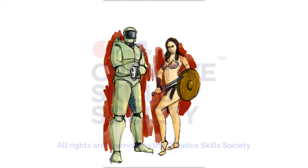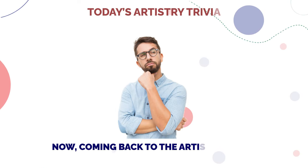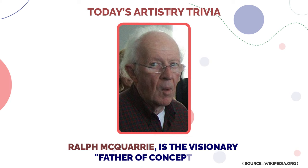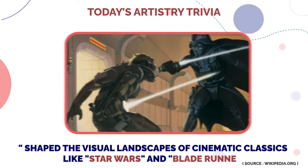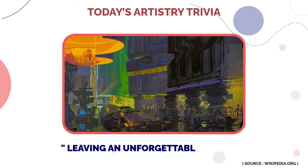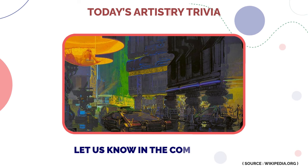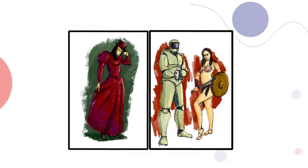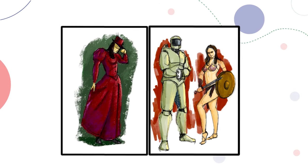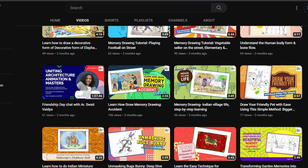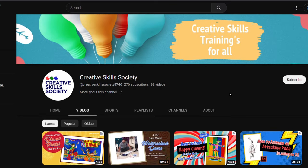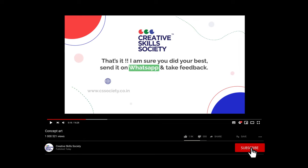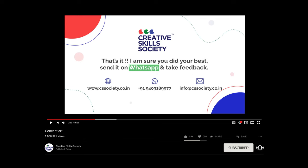Don't forget to practice and come up with creative ideas. Coming back to the artistry trivia question — Ralph McQuarrie is the visionary father of concept art. He shaped the visual landscape of cinematic classics like Star Wars and Blade Runner, leaving an unforgettable mark on the world of film. Let us know in the comments if you guessed it right. Share your output with us on WhatsApp for further evaluation and feedback. For more helpful tutorials, visit the Creative Skills Society's YouTube channel. Thanks for watching — subscribe and hit the bell icon to never miss a drawing tutorial from CSS.